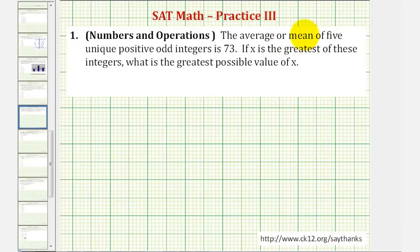The average or mean of five unique positive odd integers is 73. If x is the greatest of these integers, what is the greatest possible value of x?